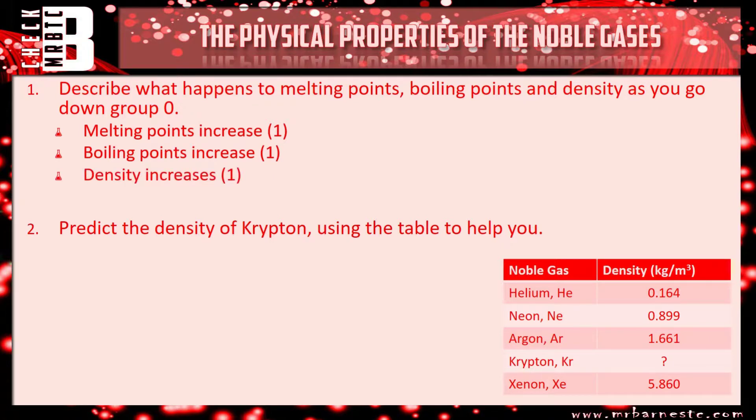In terms of predicting the density of krypton for question two. Again what we said, add the ones above and below together. So 1.661 added to 5.860 gives you 7.521 and divide that by 2 gives you 3.761. Notice how I've used three decimal places because the question is giving you the information in three decimal places. Get used to doing that. So if you got 3.761 that would have got you your mark.